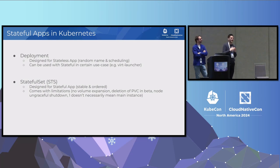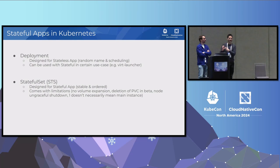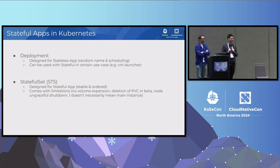StatefulSets are also very defensive when it comes to starting a replacement pod. When one of your nodes becomes unavailable, Kubernetes doesn't know if the node is really down or if there's just network partitioning with the application still running. It conservatively assumes it's still running and doesn't create a replacement pod for your Postgres or Elastic. You need an operator or a human to confirm the unavailable node is truly shut down — only then will the StatefulSet create a replacement pod.